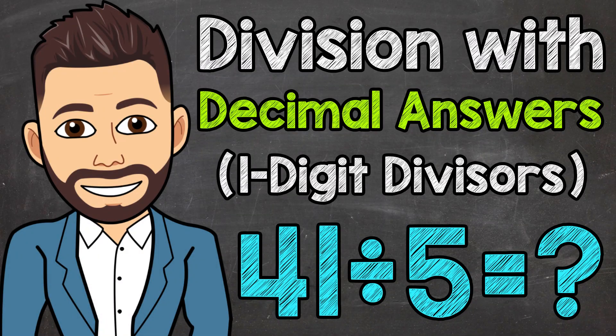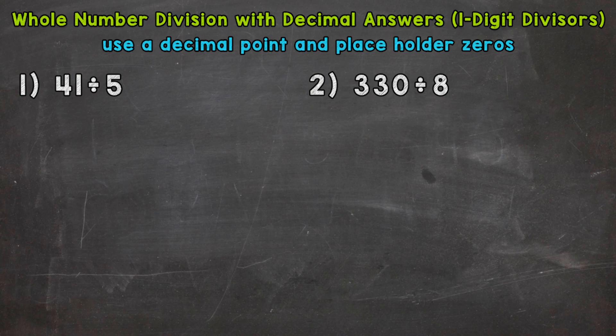Welcome to Math with Mr. J. In this video, I'm going to be covering whole number division with decimal answers or decimal remainders, and we're going to be working with one-digit divisors. When it comes to decimal answers or decimal remainders, we need to use a decimal point and placeholder zeros. You'll see exactly what I mean by that as we go through our examples.